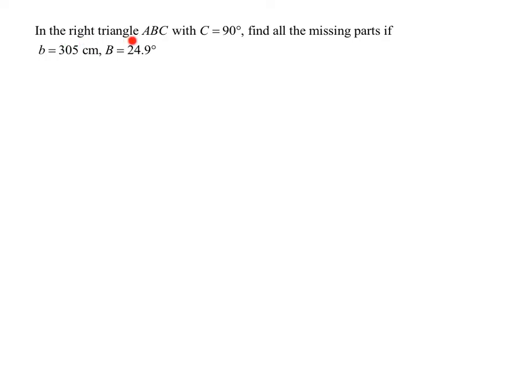In this problem, we're given a right triangle ABC with angle C being 90 degrees. We need to find all the missing parts if side B is 305 centimeters and angle B is 24.9 degrees.